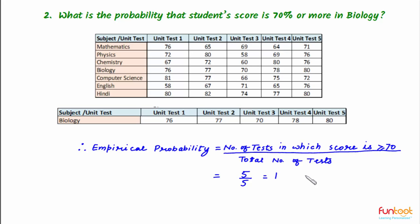Getting a probability of 1 means that getting 70% or more marks in biology is a sure event. Here we are talking about empirical probability and not theoretical probability, which is based on possibilities. For example, the student may not be able to write the next test, or some other unfortunate incident may prevent the student from getting 70% or more. This probability is empirical and is purely based on available data.